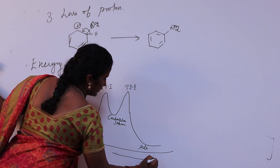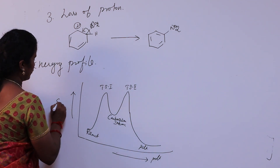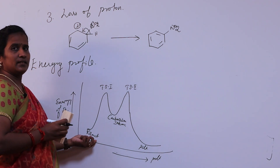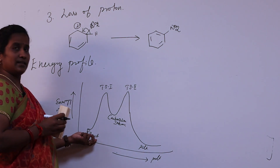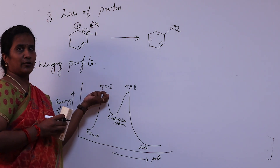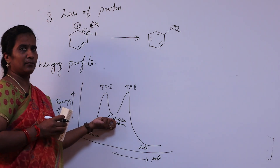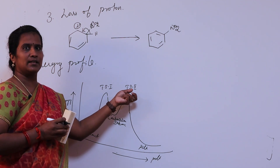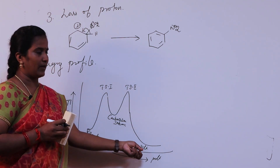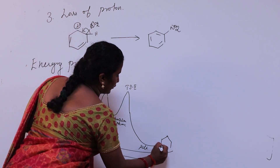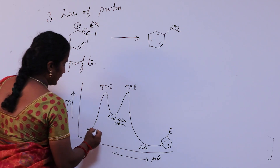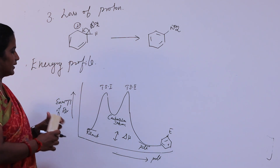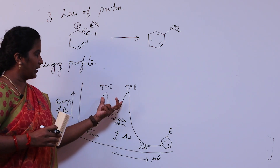The energy profile shows the product at the end. The benzene reactant proceeds through the first transition state — the resonance structure — then to the carbocation intermediate, which is the slow step. The second transition state corresponds to proton loss, giving the product. The energy gap between reactants and product is delta H.